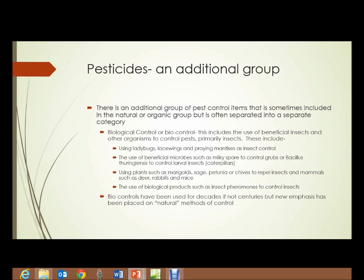That's the biological control, or biocontrol, group of pesticides. This includes things like the use of beneficial insects and other organisms to control pests, primarily insects — including things like using ladybugs, lacewings, and praying mantises as control for harmful insects. Or the use of beneficial microbes such as milky spore to control grubs, or the use of Bacillus thuringiensis, another bacteria, to control larval insects — basically caterpillars. Bacillus thuringiensis is used for control of any type of caterpillar. Also includes using plants such as marigolds, sage, petunia, or chives to repel insects and mammals such as deer, rabbits, and mice.